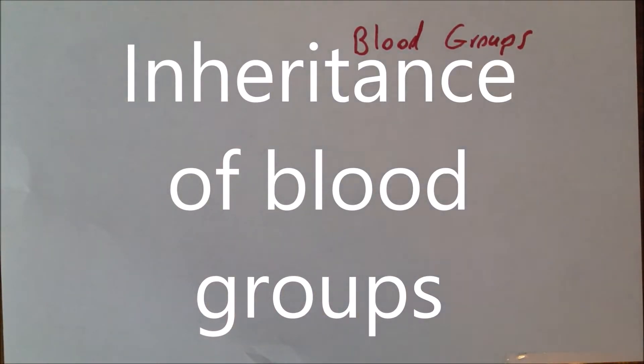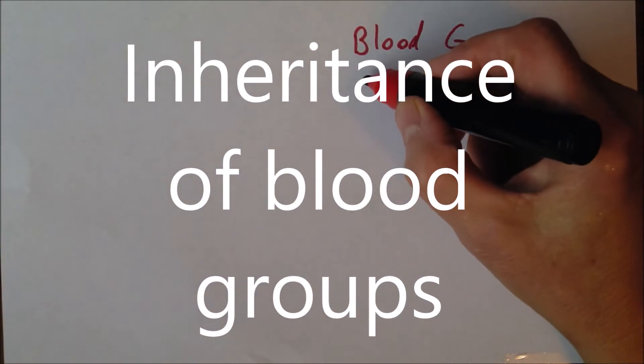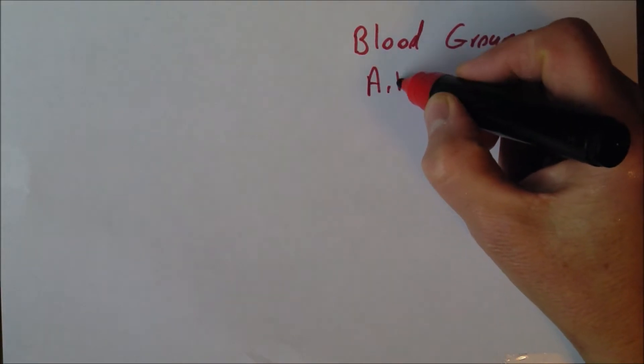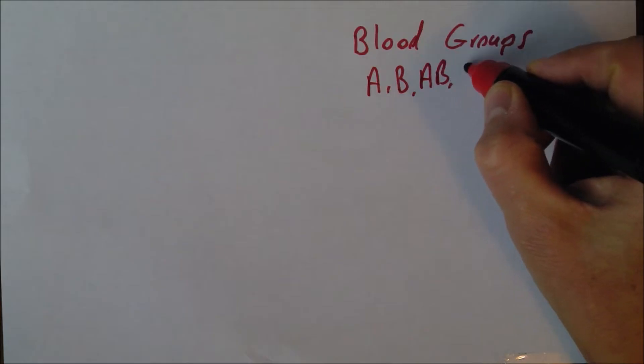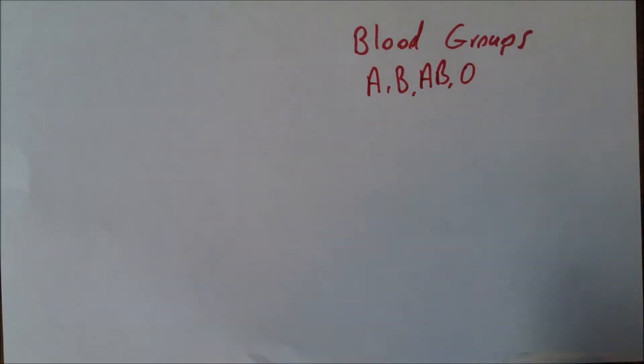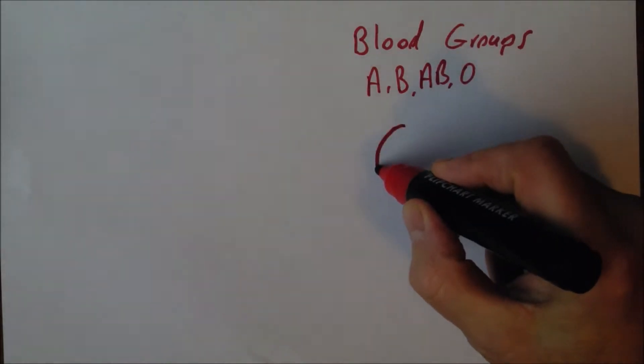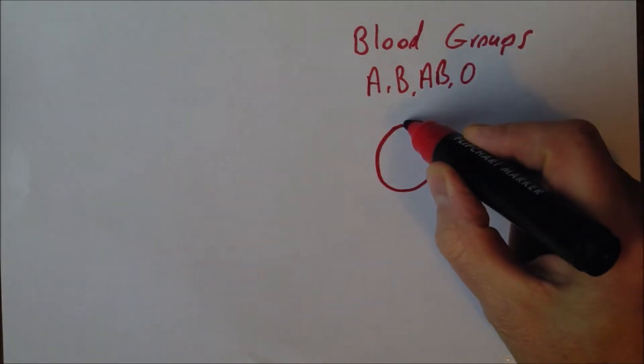Now when we're thinking about the blood groups, there can be groups A, B, AB or O. This is the ABO system, and the group is determined by the nature of the antigens on the surface of the red cell.